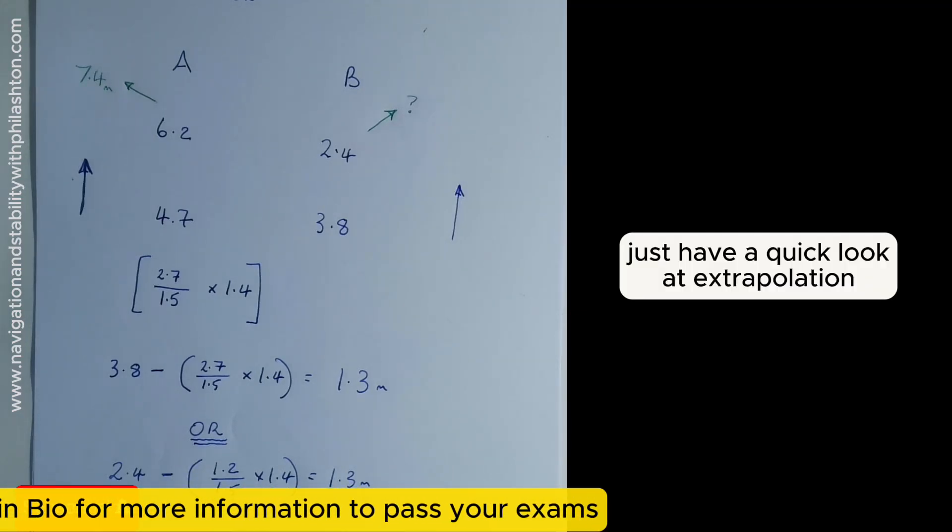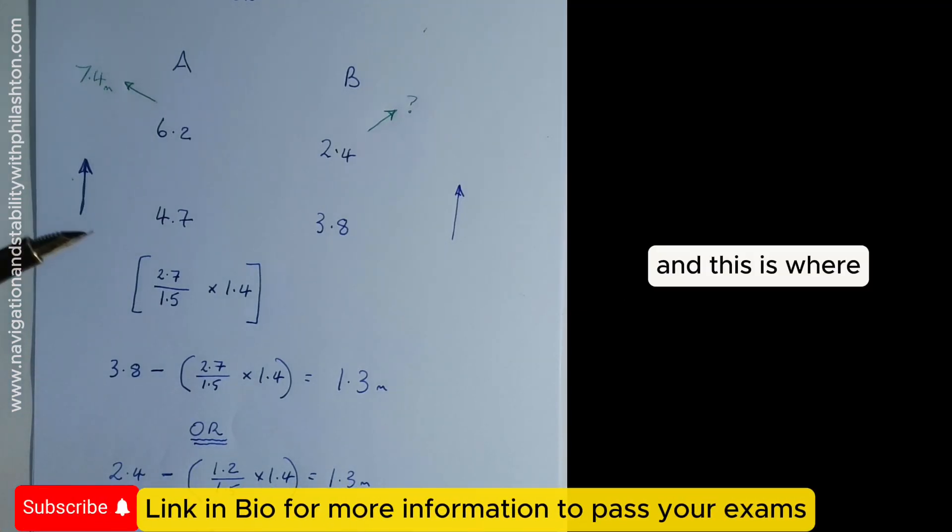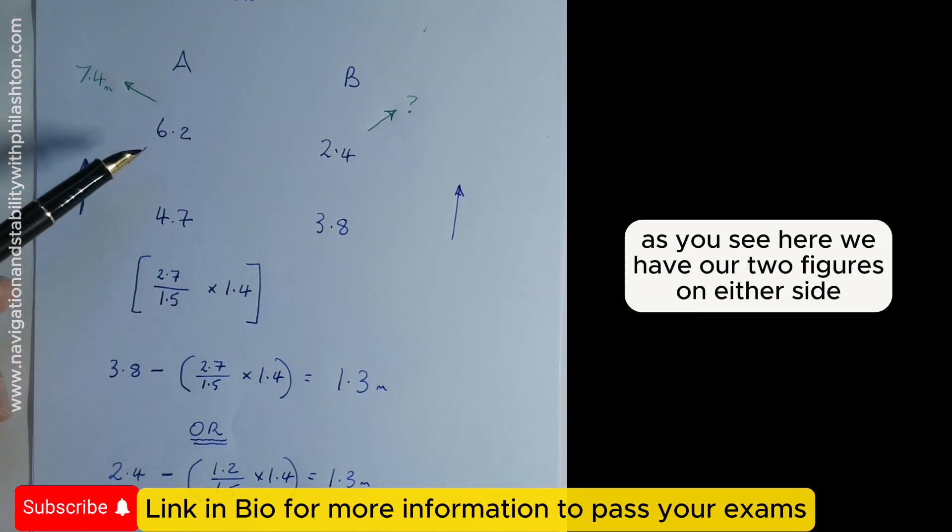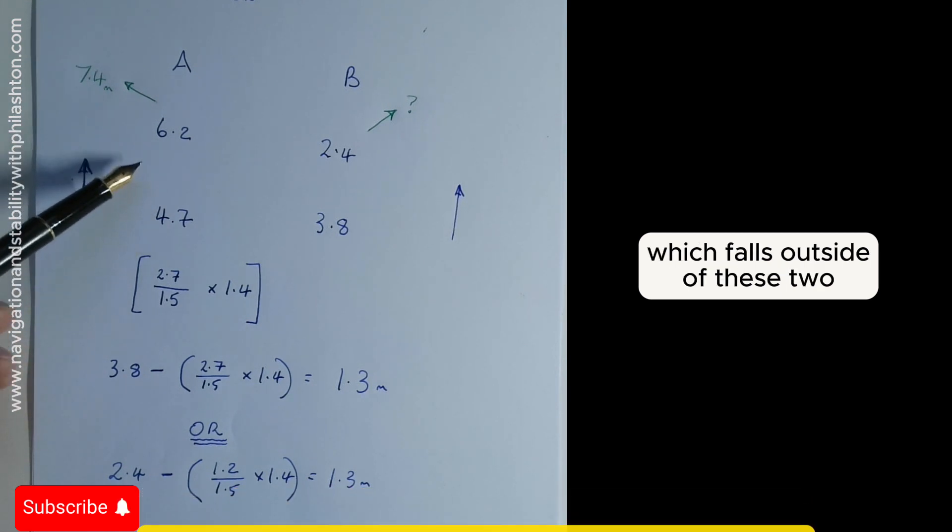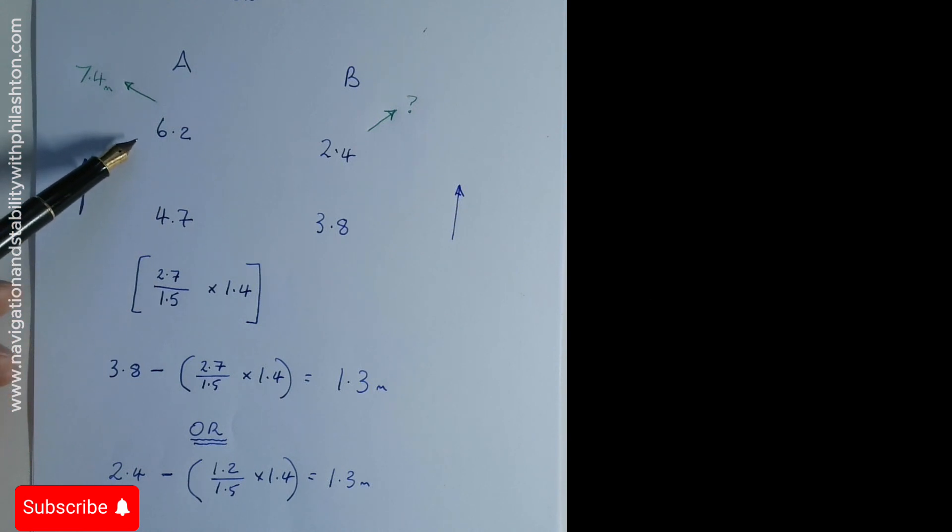Let's have a quick look at extrapolation. As you see here, we have our two figures on either side, and the figure on this side is 7.4, which falls outside of these two, and therefore we